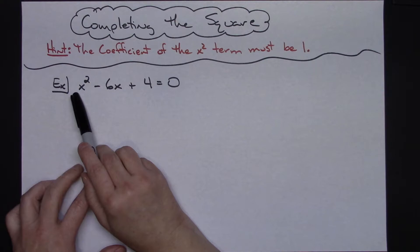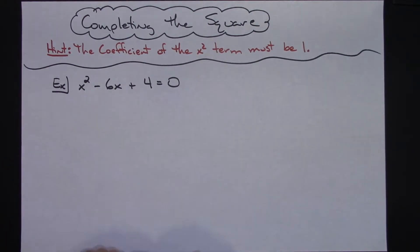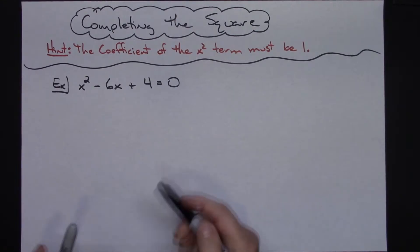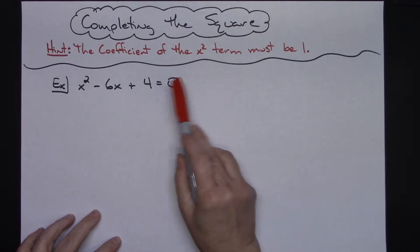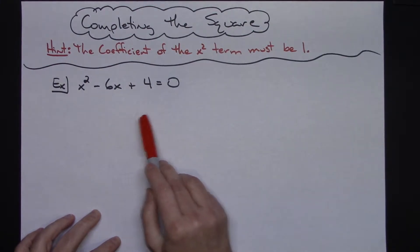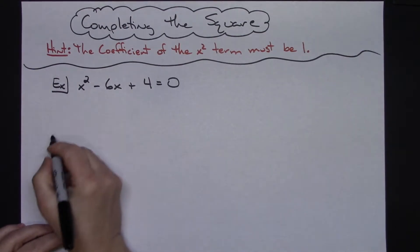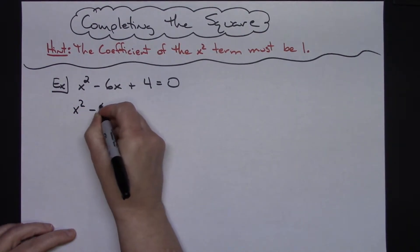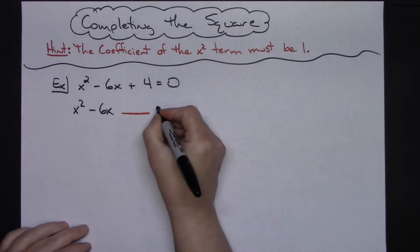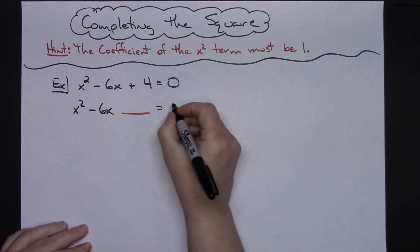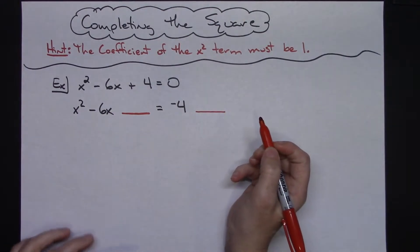The coefficient of the x-squared term must be 1 for you to complete the square. In this first example I've got a leading coefficient of 1. In my second example I'll show you how to handle it when you have some number other than 1. So for starters, to complete the square on this quadratic, the first thing I'm going to do is move the constant over to the right-hand side — subtract 4 from both sides. I always set it up leaving two blanks for where I'm going to complete the square.